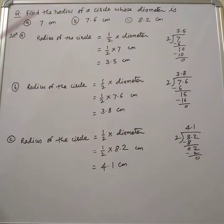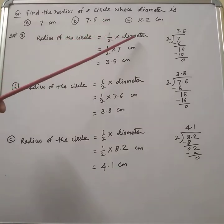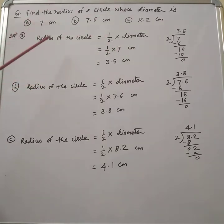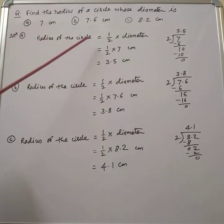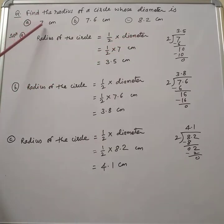Now the solution. The radius of the circle is equal to half of the diameter. The formula is: radius of the circle is equal to half into diameter. The diameter is given as 7 centimeters.